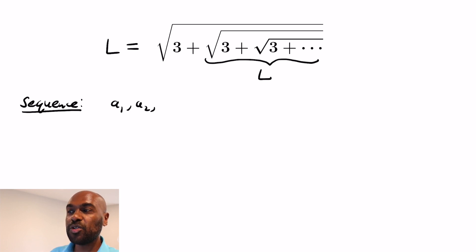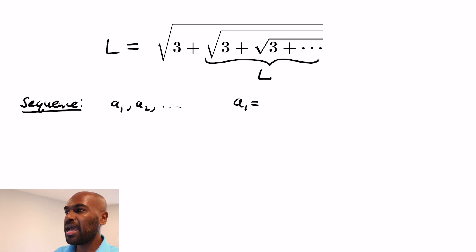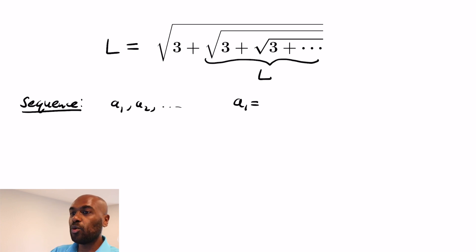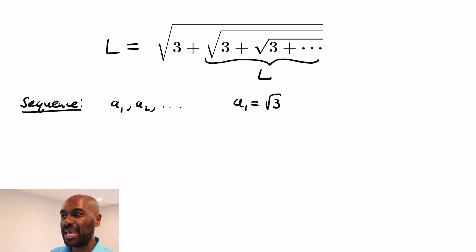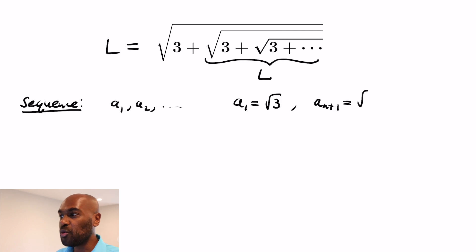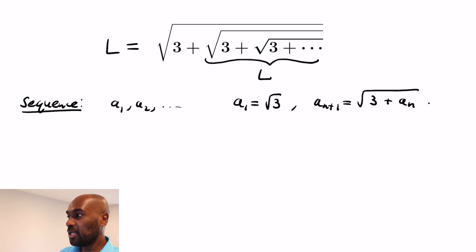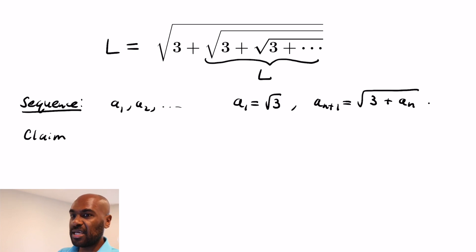There's a cool technique for checking convergence: we think of this as a sequence a_1, a_2, etc. We set a_1 = √3, and then a_{n+1} = √(3 + a_n). So the next term is √(3 + √3), and so on. If we keep iterating, we get exactly in the limit the expression we have. But we want to confirm this sequence actually converges.